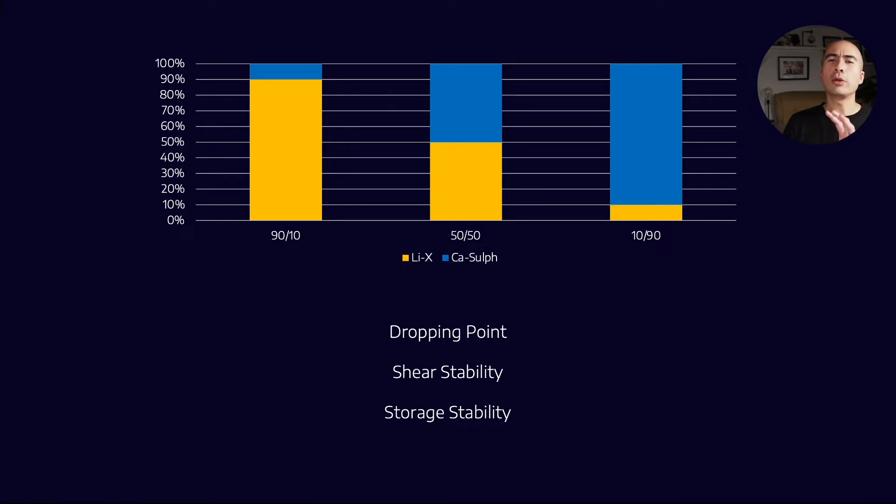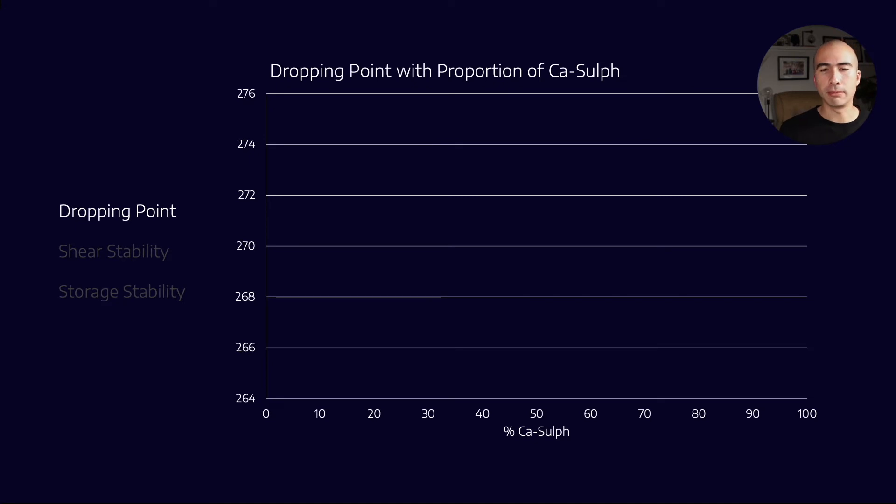Now, how would you expect this to look? Let's say, for example, I took, in this instance, I looked up 460 Centistoke, a lithium complex grease, as well as a calcium sulfonate grease that were both NLGI2.